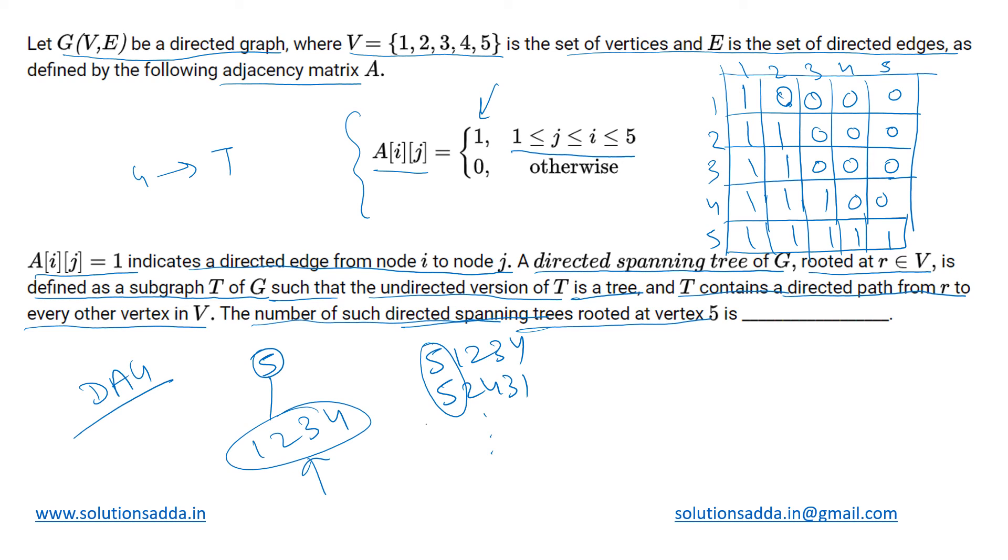It is just that there must be directed paths existing from 5 to all of them, but in any order we are not concerned with that. So for finding the number of such trees, we will just take the permutation of these four vertices. We will start with 5, and for these four places we can fit 1, 2, 3, 4 in any order.